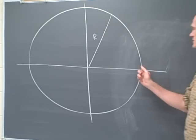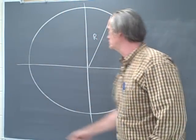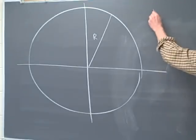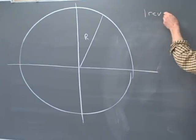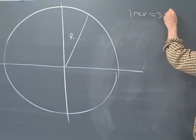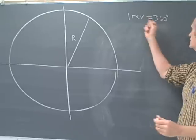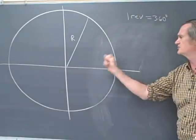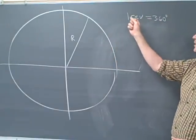Traditionally the way we measure angles is in terms of degrees, so we have one revolution is equal to 360 degrees. But this division of the circle into 360 pieces, that's completely arbitrary.